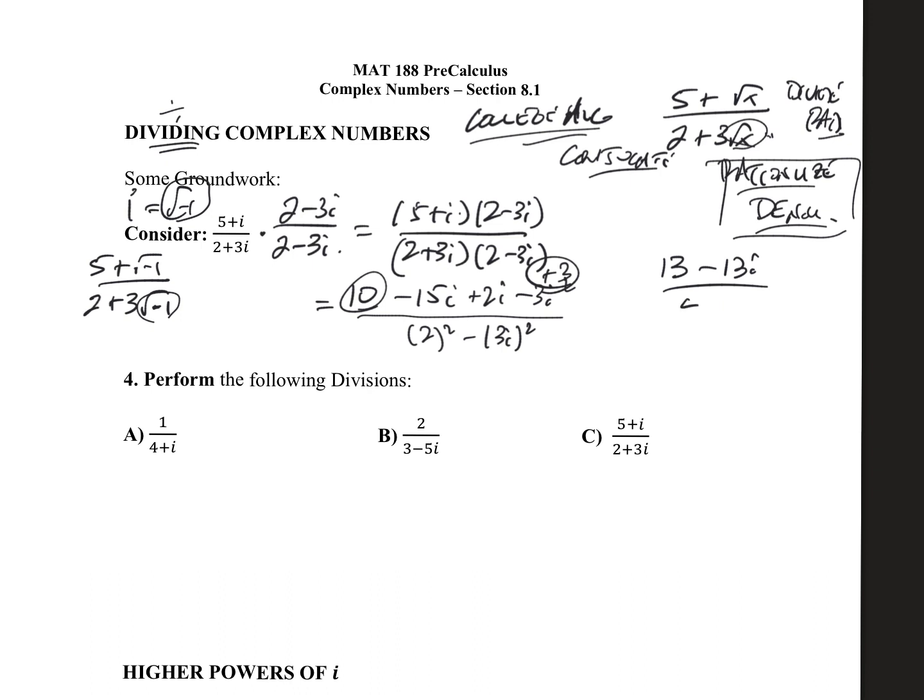And down below, what we have is 4 minus 9i squared, which is 13 minus 13i. This turns into 4 plus 9, which is basically 13 minus 13i over 13. We got lucky here because everything cancels out, and we're left with 1 minus i. That doesn't always happen, but it did in this case.